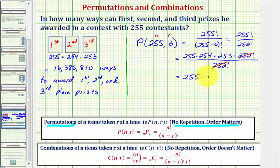This equals 255 times 254 times 253, which equals 16,386,810, which again is the number of ways these three prizes can be awarded with 255 contestants.